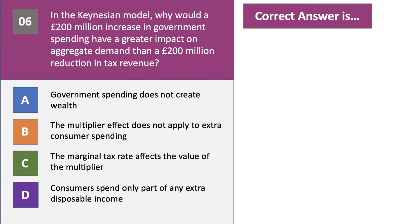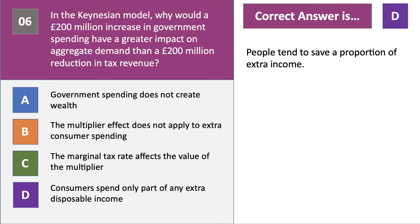Question six: in the Keynesian model, why would a £200 million increase in government spending have a greater impact on aggregate demand than a £200 million reduction in tax revenue? The right answer is D. People tend to save a proportion of their disposable income, so if you give people a tax cut they would have saved some of it anyway. Whereas a £200 million increase in government spending has a direct effect on aggregate demand, and hopefully the multiplier effect then kicks in.